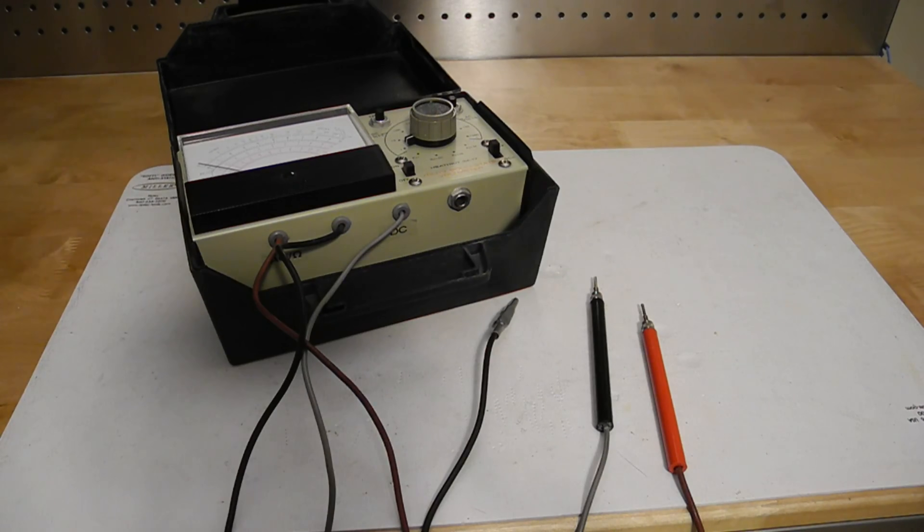To the right of the leads is a 1.25 inch jack for optional accessories, a high voltage probe for measuring high voltages like those on television picture tubes, and an RF probe for measuring radio frequency signals. These were sold separately by Heathkit.